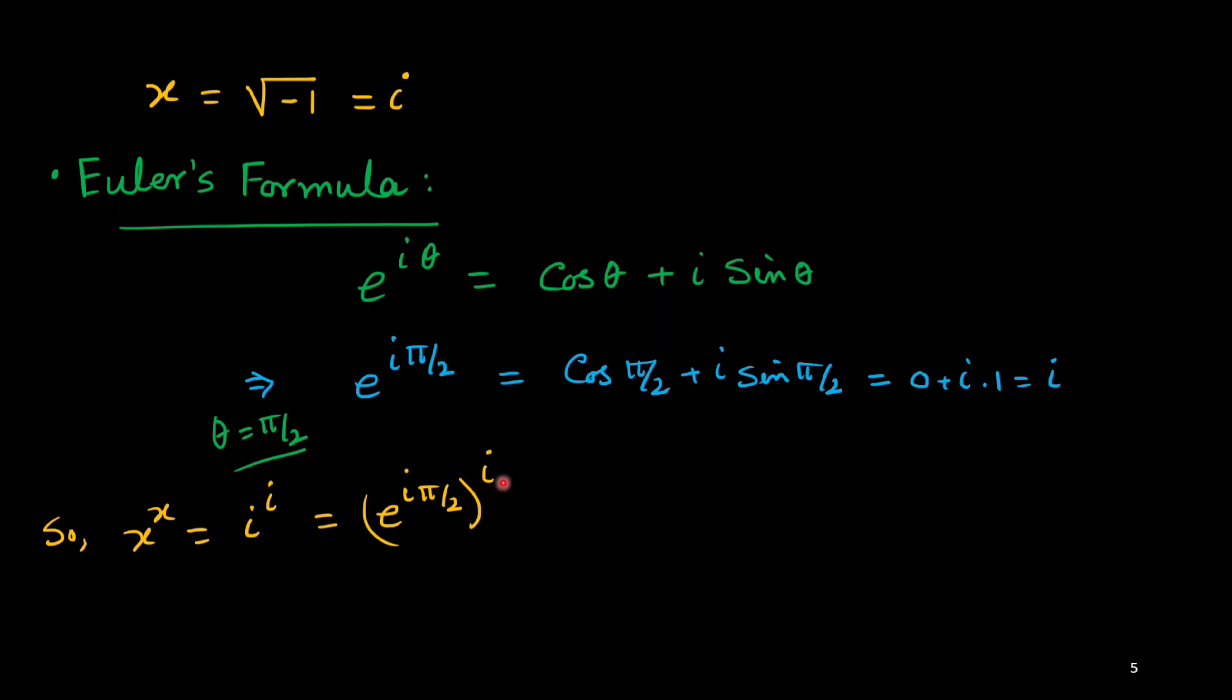a to the power m to the power n equals a to the power m times n. We can use that, so this i will be multiplied with this power: e to the power i times pi by 2 times i.